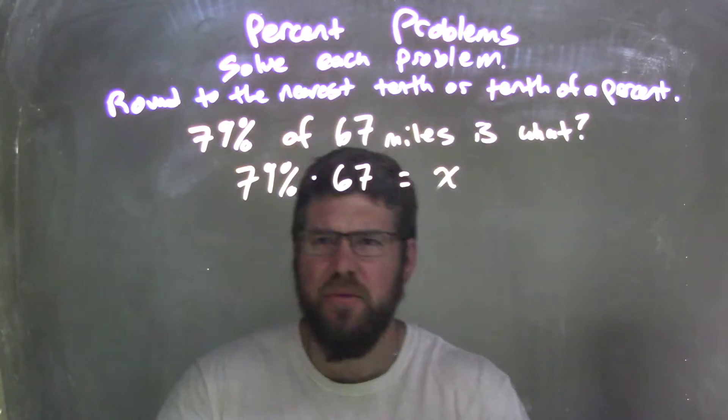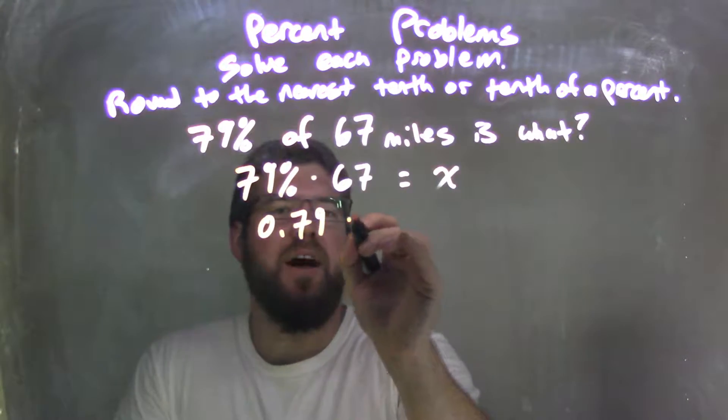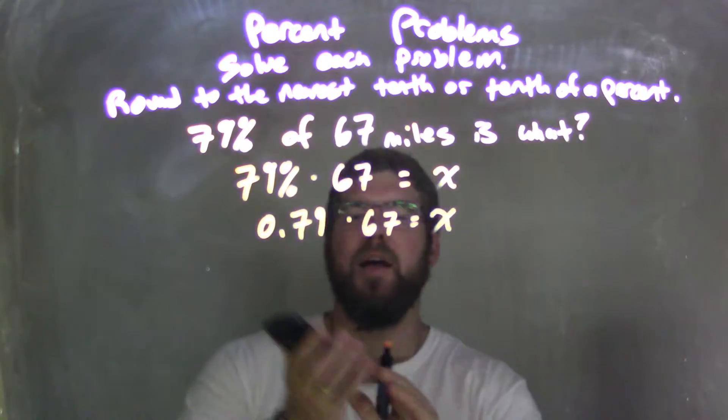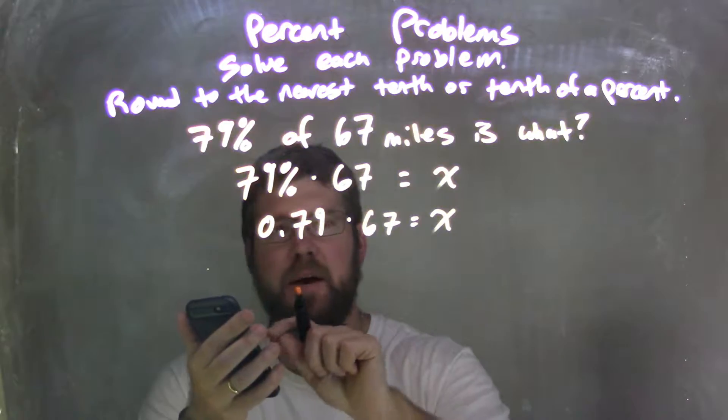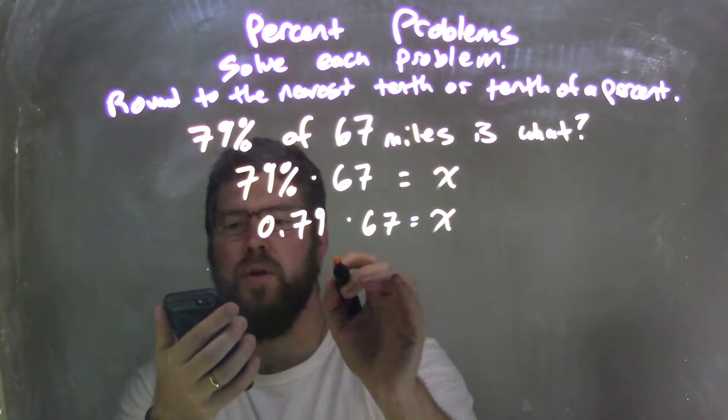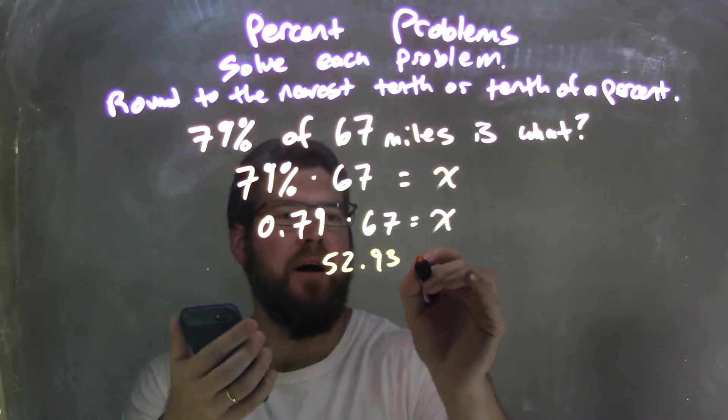So I then convert 79% to a decimal to multiply that. So I have 0.79 times 67 equals x. And then I'm going to use my calculator here. What's 0.79 times 67? It comes out to be 52.93. So 52.93 equals x.